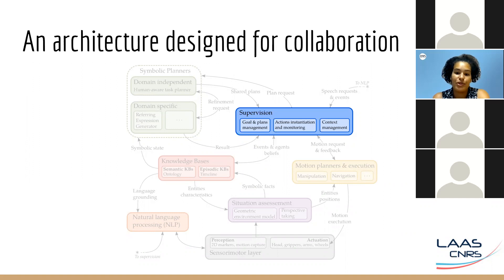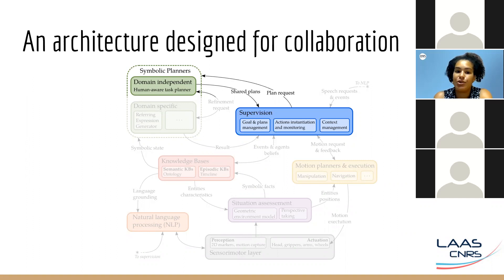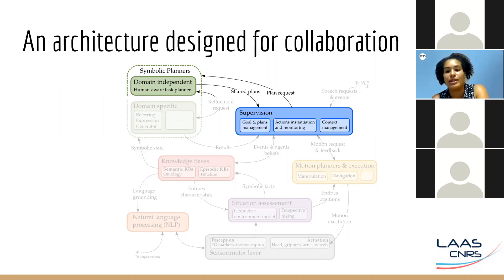If something unexpected happens, an error, the system can try to communicate with the human and/or get a new plan. All decisions are based on the robot's knowledge and perception of the environment and the human. Knowledge comes either from the supervision itself or the knowledge bases. The symbolic planners are divided into two categories: domain-independent planning for high-level tasks, and domain-dependent for solving precise problems. Symbolic means the data we base ourselves on are facts, represented as triplets that can be true or false.